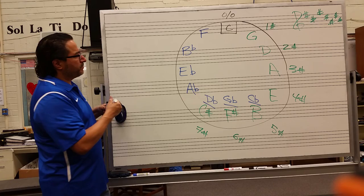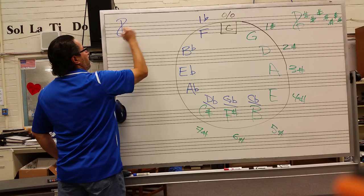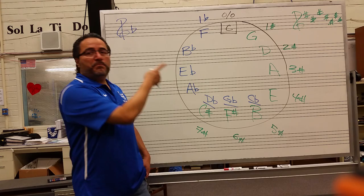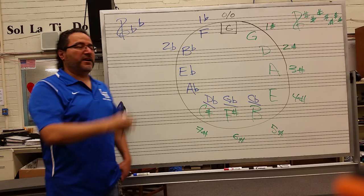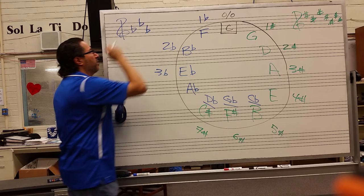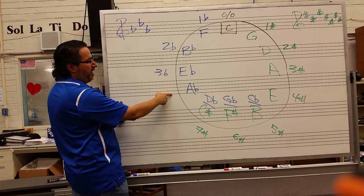F is going to be one flat: B flat. Key of B flat has two flats: B flat and E flat. Key of E flat has three flats: B flat, E flat, A flat.